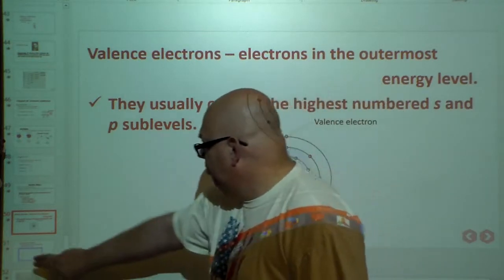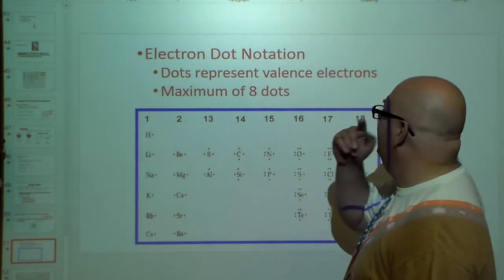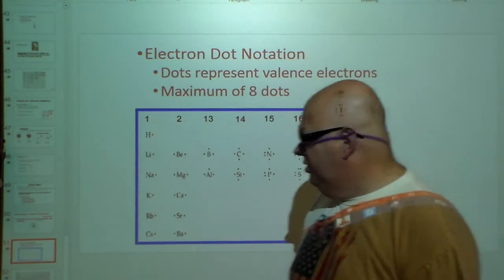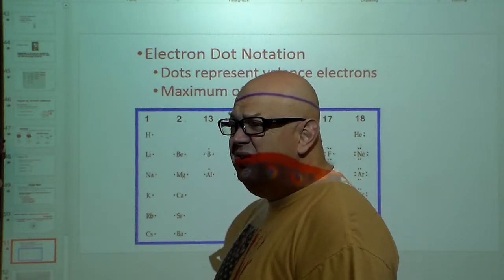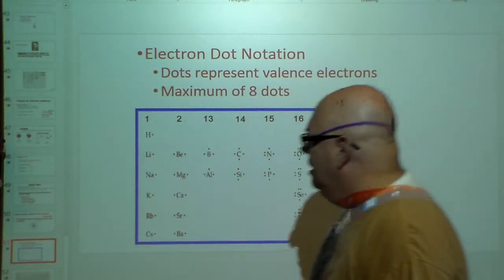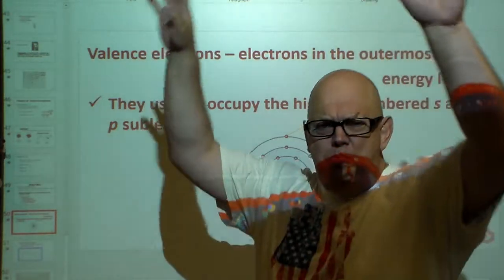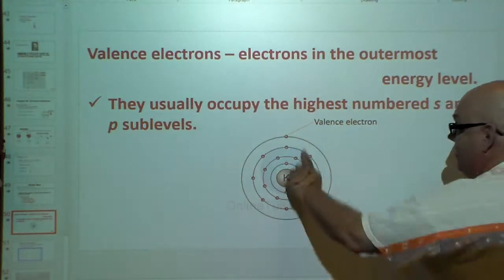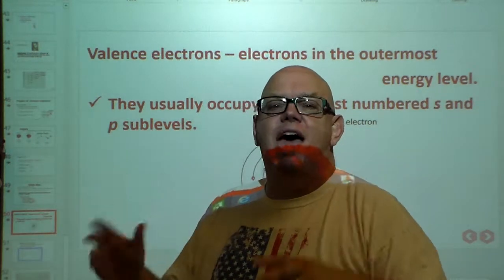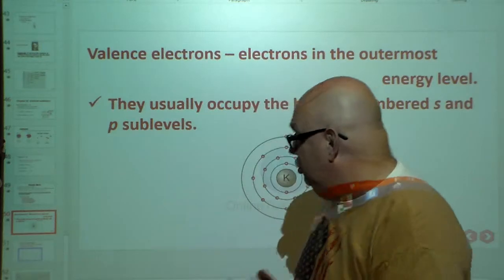That gets us into electron dot notation, where we use dots to represent valence electrons. You can have a minimum of 0 — or at least 1 — up to a maximum of 8. Why do we bother with valence electrons? Because that's where the hookups are made between atoms. It's not the inner electrons that do the bonding. The electrons out here in the outer level are the ones that make things happen — they cause atoms to react. Those tiny particles control an awful lot.